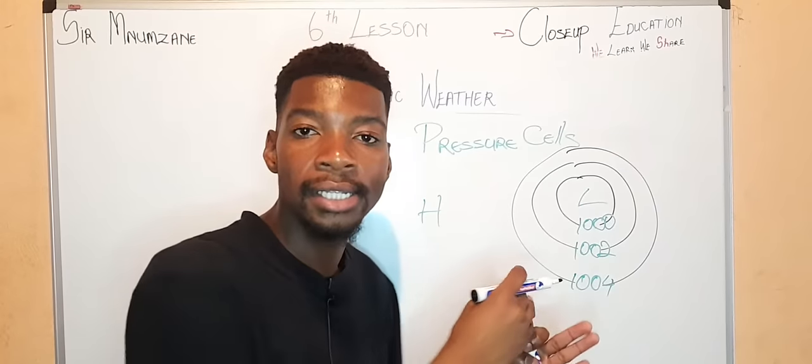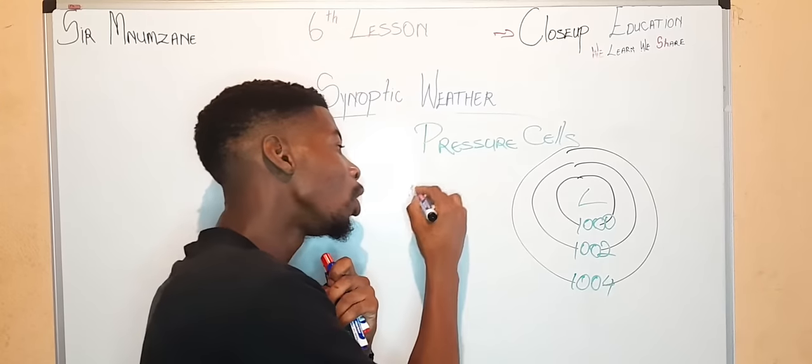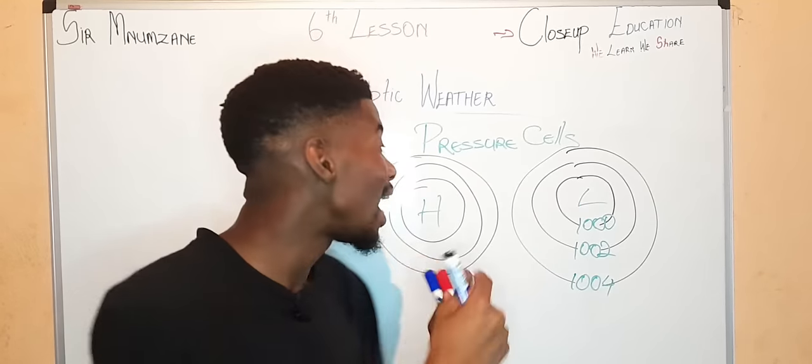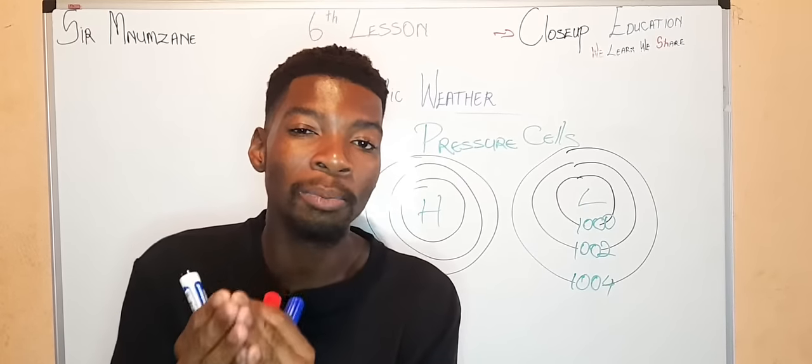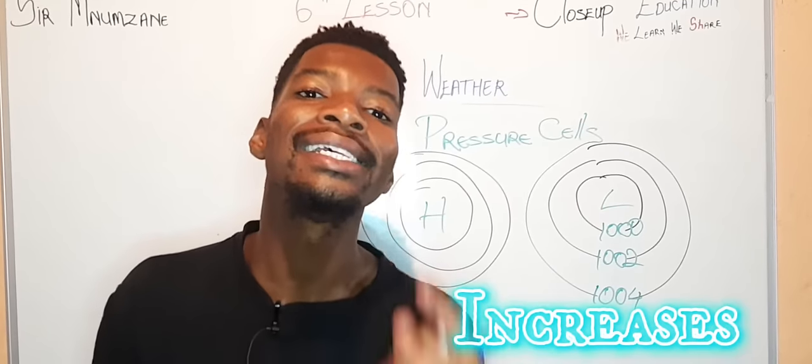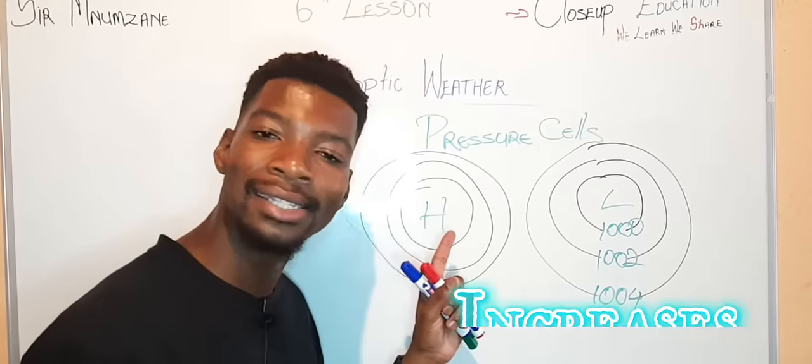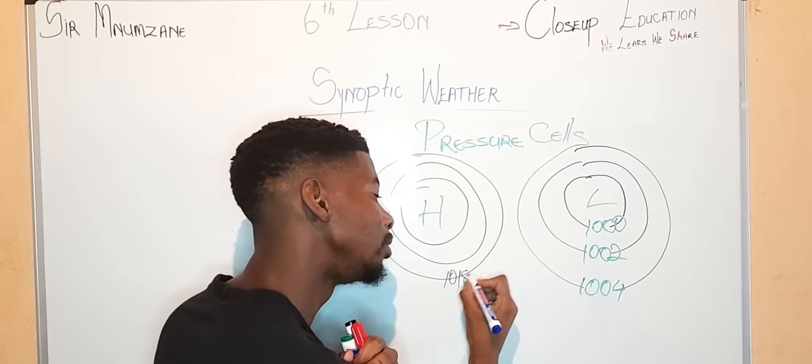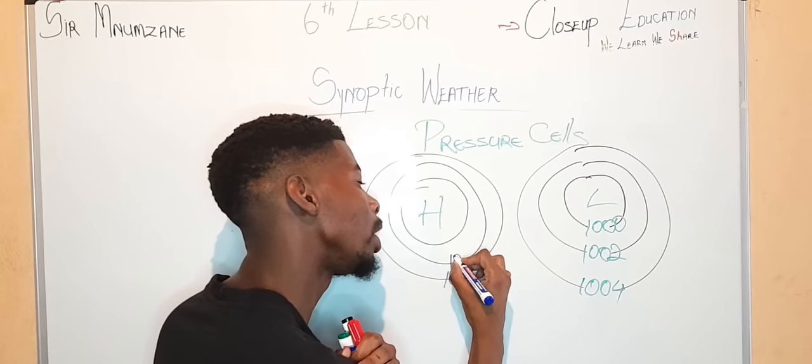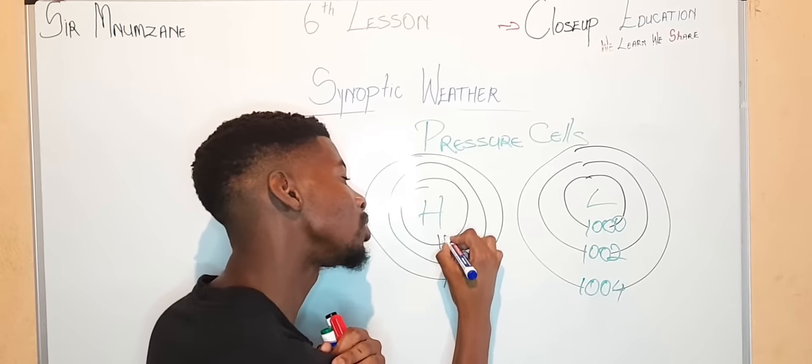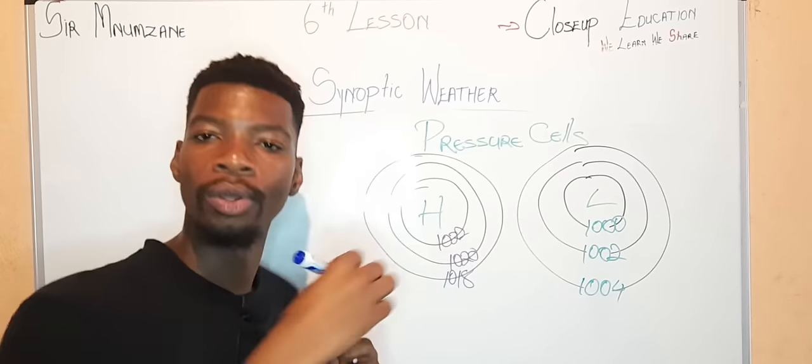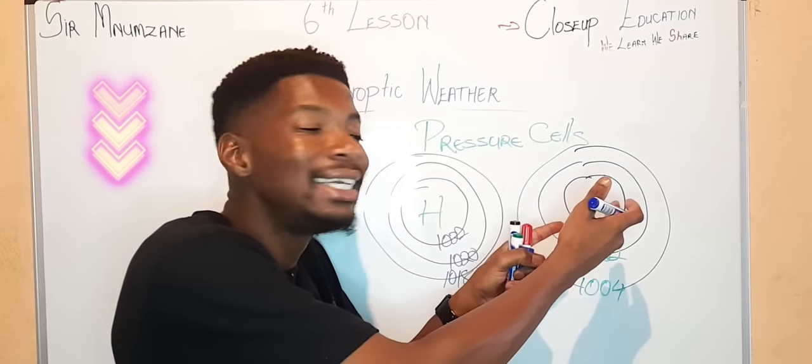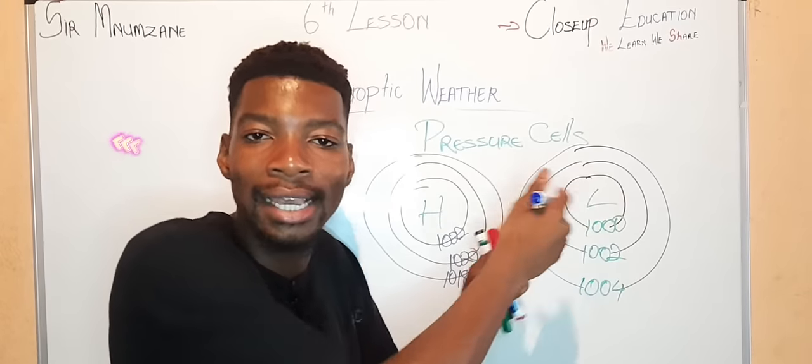What about high pressure cells? The high pressure cells also have isopars, but in a high pressure, the atmospheric pressure or the atmospheric reading increases towards the center. So if here it is 1,018, here it's going to be 1,020 and here it's going to be 1,022. It increases towards the center while on a low pressure, it decreases towards the center.